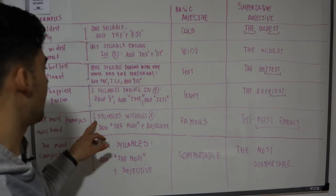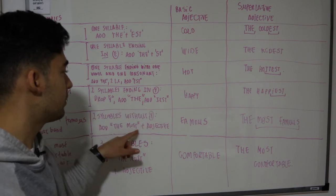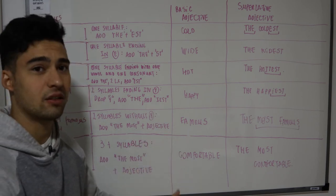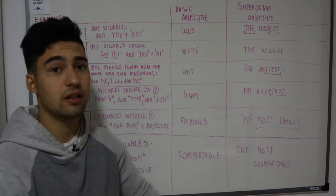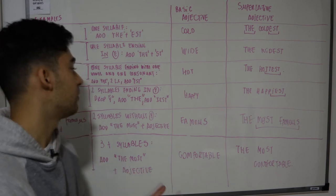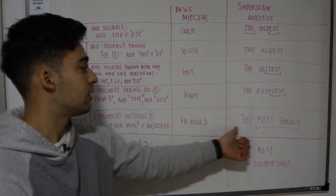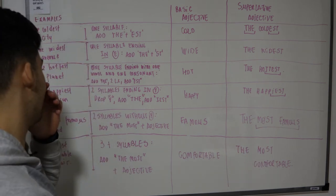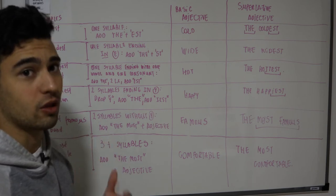En la penúltima regla tenemos las palabras de dos sílabas que no tienen y. A ellas se les agrega la palabra the most y el mismo adjetivo original. Uno se da cuenta por el hecho de que son palabras largas, lo mismo que pasa en los comparativos. Palabras que tienen dos sílabas o más sílabas siempre se va a agregar el the most, que sigue significando lo más grande de eso, lo mayor de eso. Es la magnitud de lo que se está hablando. Entonces dos sílabas sin la y, se agrega the most y el adjetivo original. Para famous decimos the most famous, lo más famoso, el más famoso. Entonces como ejemplo pusimos the most famous music band, la banda de música más famosa de todas las bandas.